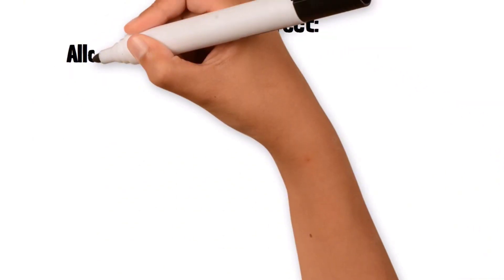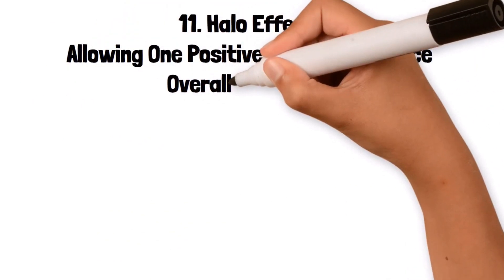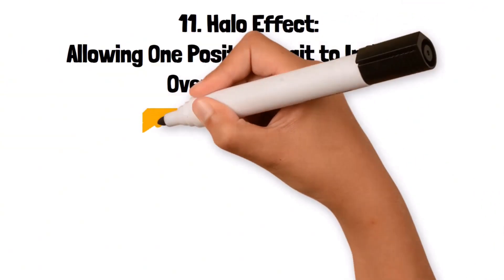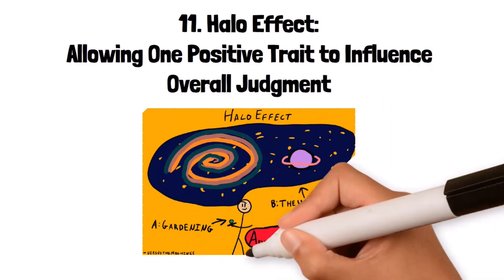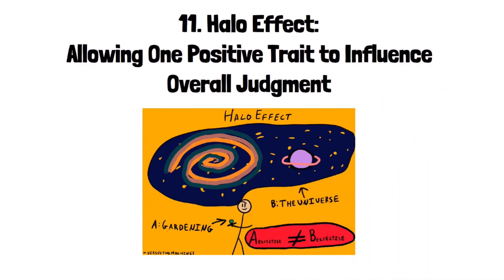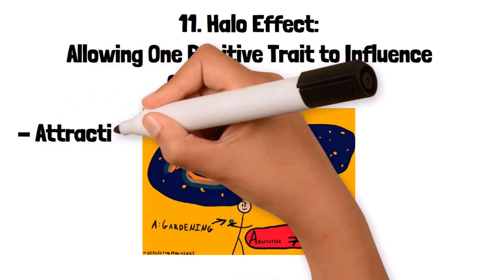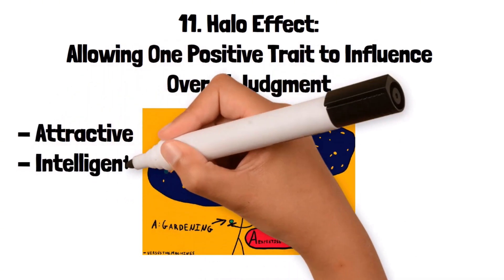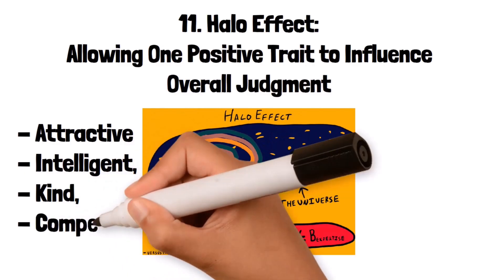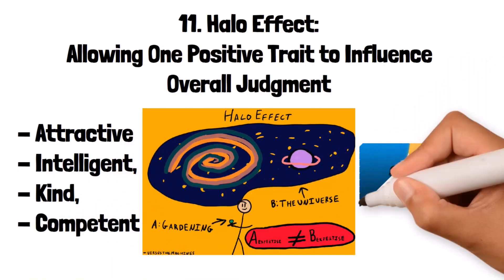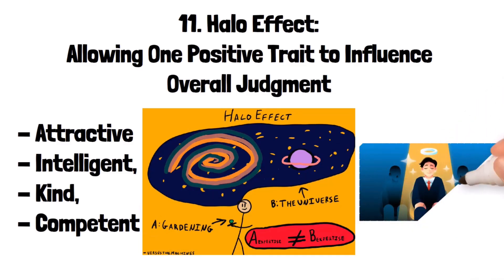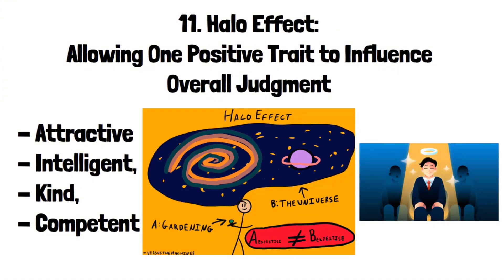11. Halo Effect: allowing one positive trait to influence overall judgment. The halo effect is a bias where the perception of one positive trait influences the perception of other traits of a person or thing. If someone is perceived as attractive, others might also assume they are intelligent, kind, or competent. For instance, in a job interview, an interviewer might be more likely to view a well-dressed candidate as more capable, even if their qualifications are similar to those of other candidates.